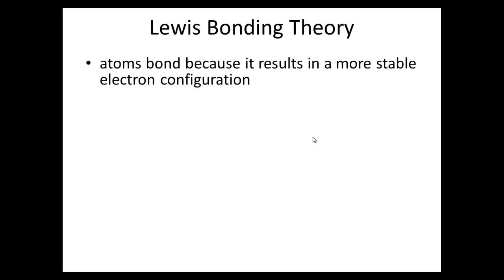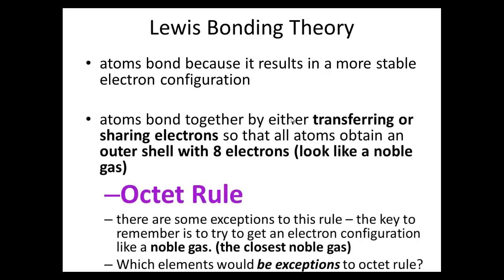We can actually use a very simplistic modeling, which is called Lewis bonding theory. And we can use this to describe how atoms bond together. And atoms bond because it results in a more stable electron configuration or a more stable electron arrangement. The atoms bond together by either transferring or sharing electrons so that all atoms obtain an outer shell with eight electrons. That's the important part here, eight electrons. And that means they will look like a noble gas because you're most of... Except for helium, all your other noble gases have eight valence electrons. And this is called your octet rule because of the eight electrons.